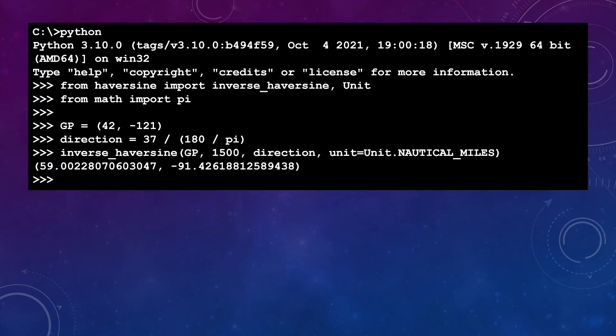But what if we use the globe map? Well in that case, we'll be using the Haversine formula. Now I'm not going to waste anyone's time deriving the Haversine formula. If you're really interested, you can just Google it. So all I've done here is write some very quick Python code. Plug in the GP of 42 north, 121 west. And I ask what the coordinates are of the point that is 1500 nautical miles away at an azimuth of 37 degrees. And you'll see that it spits out a position of 59 degrees north, 91.43 degrees west. So a little different to what we got from the AE calculation, and it's about 65 nautical miles away from the position.